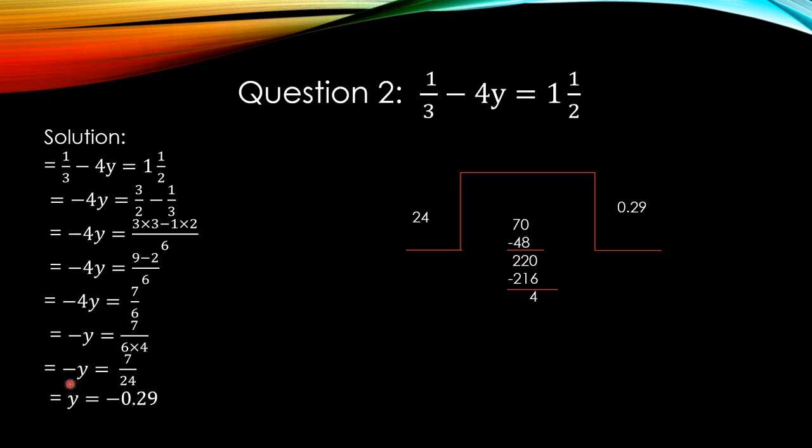Now there is a minus sign with Y. It shifts on the right hand side. Value is minus 0.29. Jab bhi aap ke paas variable ke sath minus hota hai, to woh hum khud hi shift kar dete hain answer ke saat. It shifts to the answer side. Answer is minus 0.29. Y is minus 0.29.